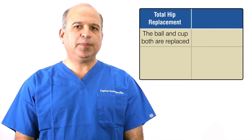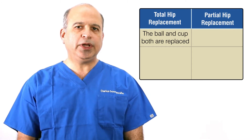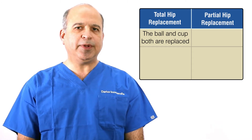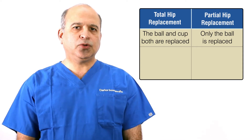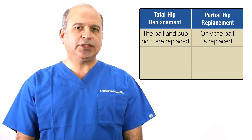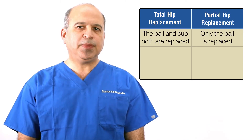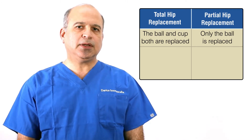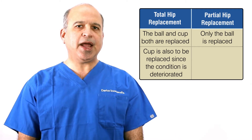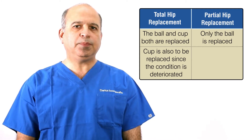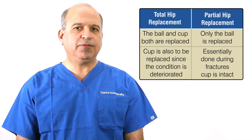A partial hip replacement is essentially done in fractures where only the ball is damaged, so the cup is totally intact and you don't need to replace the cup. In a total hip replacement, you're replacing the cup because the condition has already damaged the cup — so if you only replace the ball, the patient will continue to have pain.